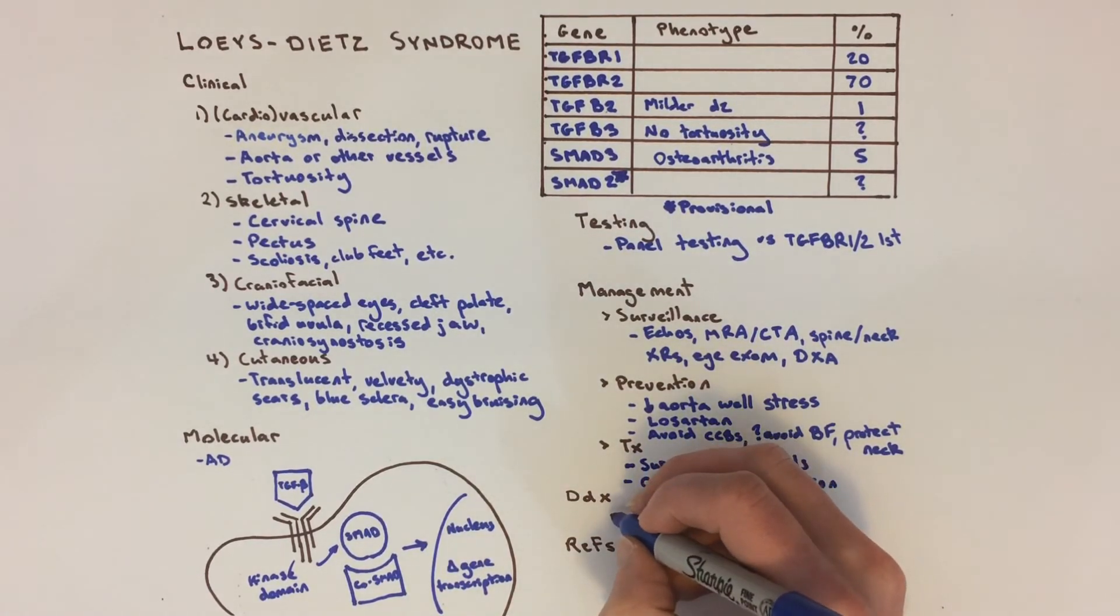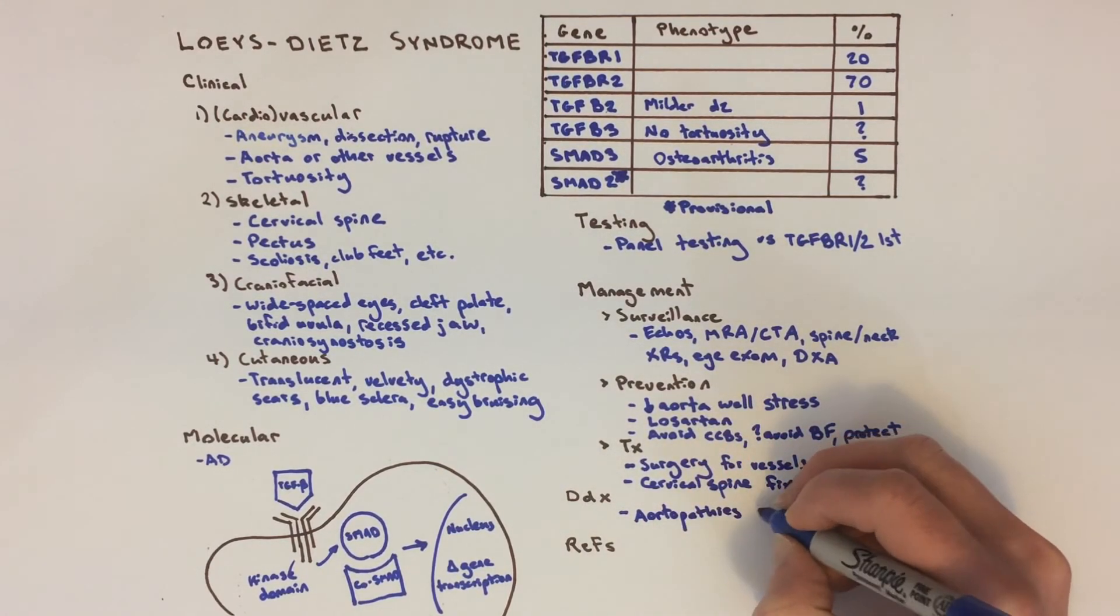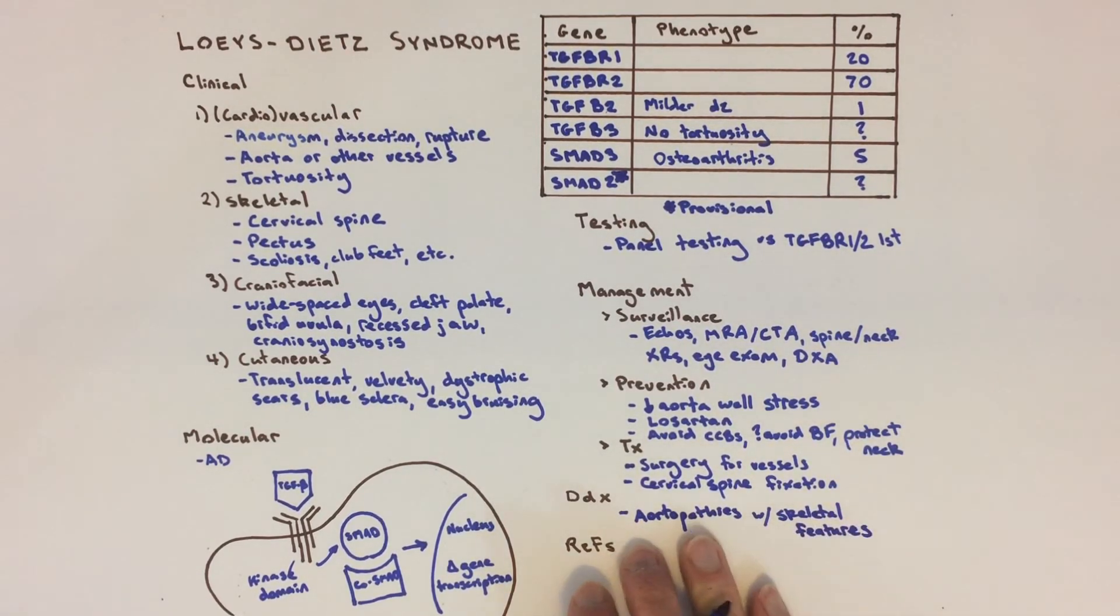If you're considering Loeys-Dietz syndrome in a patient, it's important to consider other genetic syndromes that affect the aorta, other arteries, and the skeleton. These include vascular Ehlers-Danlos syndrome, Marfan syndrome, Shprintzen-Goldberg syndrome, congenital contractural arachnodactyly, MASS syndrome which stands for mitral valve prolapse, aortic enlargement, and skin and skeletal findings, kyphoscoliotic Ehlers-Danlos syndrome, and arterial tortuosity syndrome.